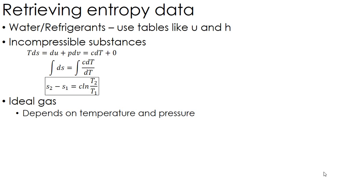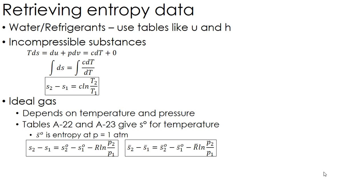Now, for an ideal gas, unlike energy and enthalpy, the entropy depends on temperature as well as pressure. So for that reason, our tables give this value that we call S naught or S to the zero or something like that. And it's related just to temperature. And this is essentially the entropy at one atmosphere of pressure.